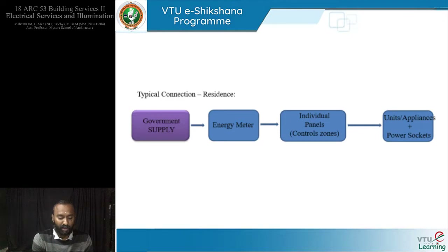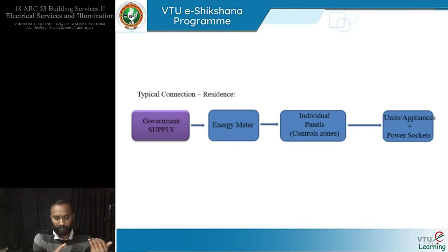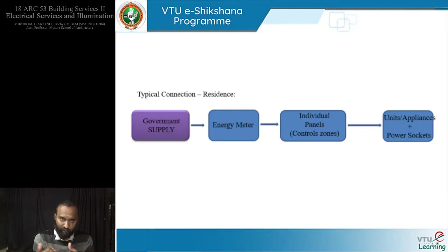What happens as a typical connection? We have the government supply coming and waiting at our premises. The government should be able to charge us, so for that matter we have this energy meter provided by the government. It has to be bought from the government to maintain standards — if all of us had our own meters, the possibility of maintaining standards would be compromised. We will have to buy government-approved meters. The government supply is fed into that meter — this is incoming from the government to the meter. Whatever goes out of the meter is up to us and our electrical engineer's strategy. From the energy meter, we will have individual panels, which are our distribution panels.